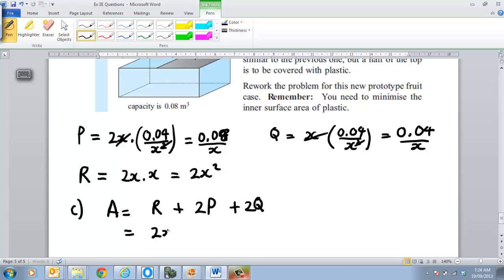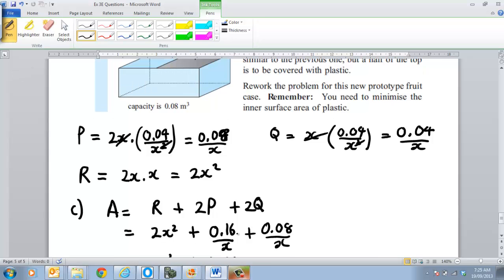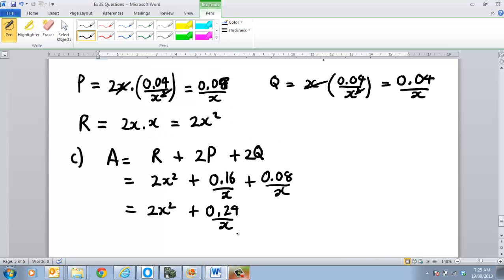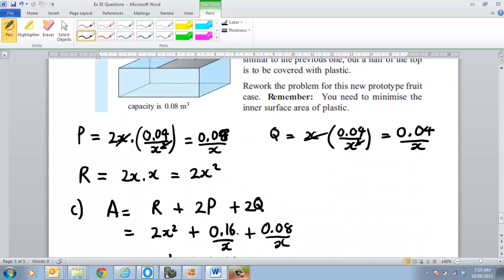So that's going to be 2x squared plus 2P. So we know P is equal to that, so that will be 0.16 over x. And then 2 of Q is going to be 0.08 all over x. So we can simplify that to be equal to 2x squared. Adding those together that's going to be 0.24 over x. So now we have a function which we could graph to maximise and minimise. And I think that's the next question, if you know these type of questions. So use technology now to find a sketch of the graph of A(x) versus x.